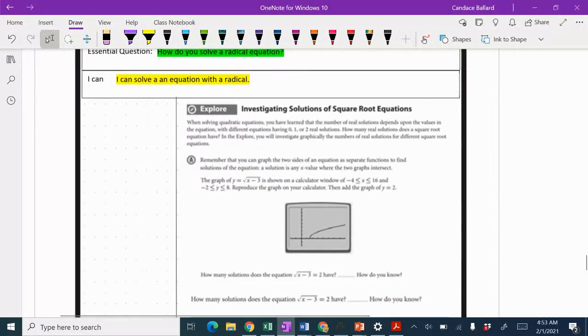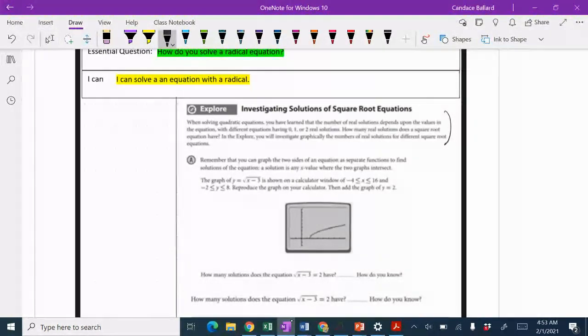We're going to start with this investigation. When solving radical or quadratic equations, you have learned that the number of real-world solutions depends on the values in the equation. Different equations have zero, one, or two real solutions. How many real solutions does the square root equation have? In the Explorer, you will investigate graphically the numbers of real-world solutions for different square root equations.